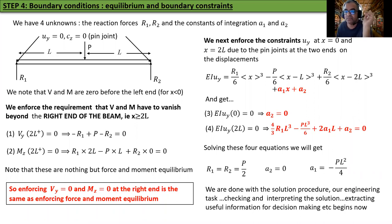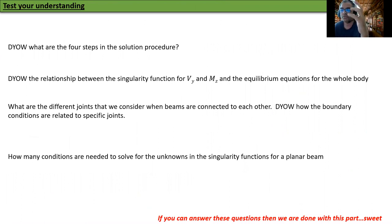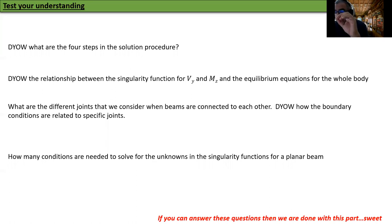Now it's ready for a quiz. Describe in your own words what are the four steps in the solution procedure — you should memorize the four steps. Describe the relationship between the singularity functions for Vy and Mz and the equilibrium equations for the whole body. Identify which things are known and which are unknown. How many conditions are needed to solve for the unknowns in the singularity functions for a planar beam? If you can answer these questions, you are done with this part.